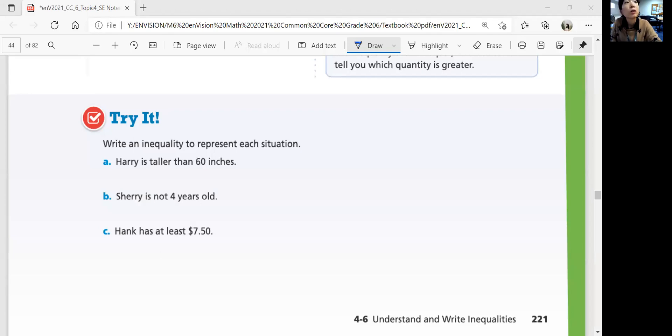Okay? So age could be Harry. Age is taller than 60 inches. Sherry is not four years old. Hank is at least. So it includes 7.5 dollars.